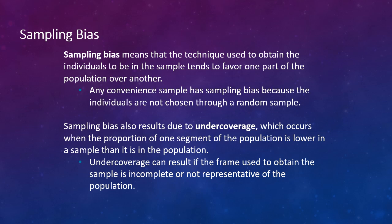Another type of sampling bias occurs due to under coverage, which occurs when the proportion of one segment of the population is lower in the sample than it is in the population, and this can possibly skew your results. Under coverage can result if the frame used to obtain the sample is incomplete or not representative of the population, or you're using specific characteristics that actually have a bias towards the result of whatever you're researching.